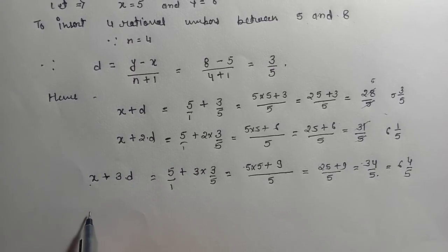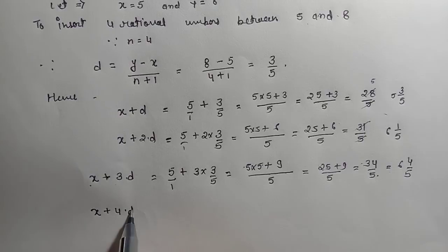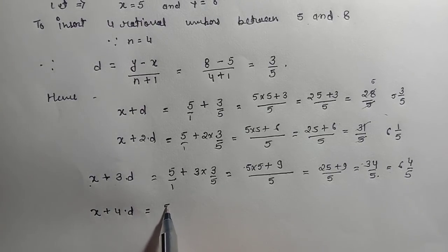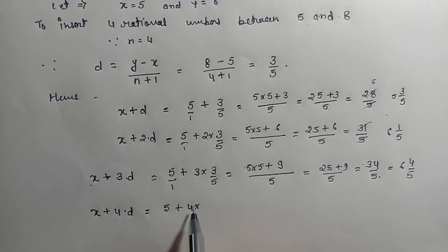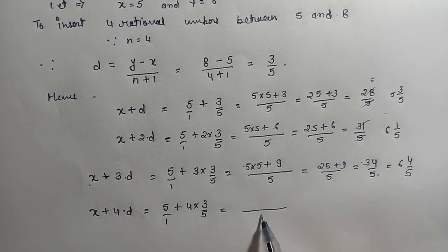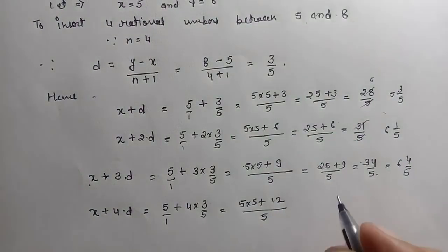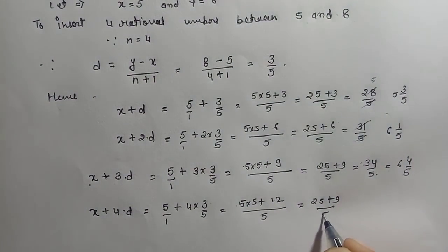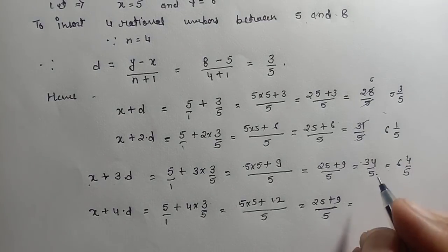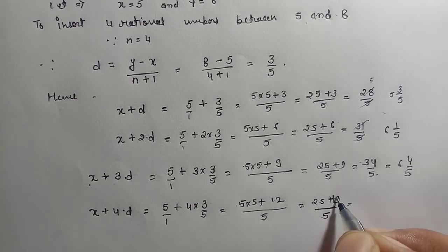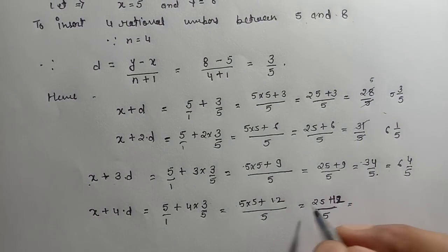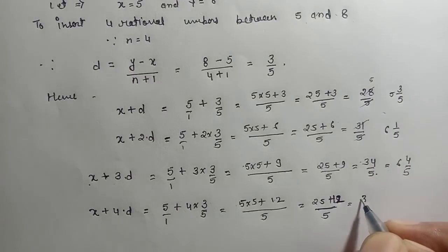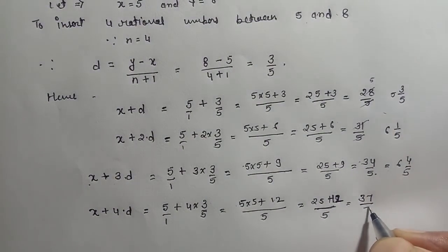For the fourth rational number, we do x plus 4d. So 5 plus 4 into d, which is 3 by 5. LCM of 5 and 1 is 5: 5 into 5 is 25, plus 4 into 3 is 12. So 25 plus 12 equals 37 by 5. Simplifying: 5 sevens are 35, and 2 by 5 — so this is 7 and 2 by 5. This is your fourth rational number.